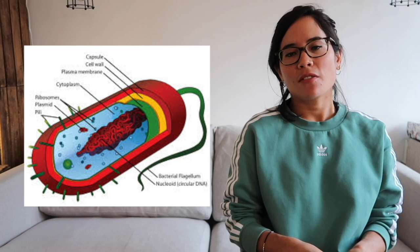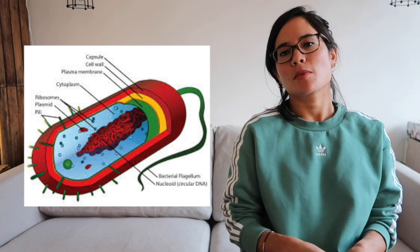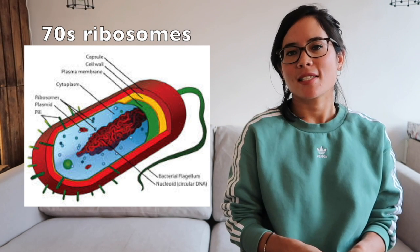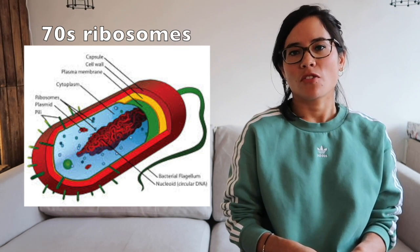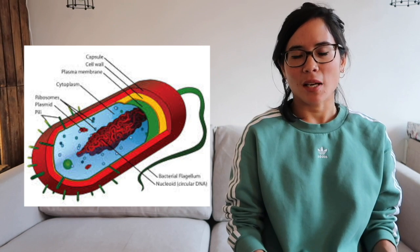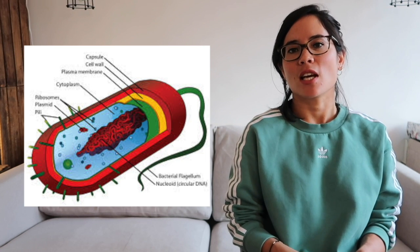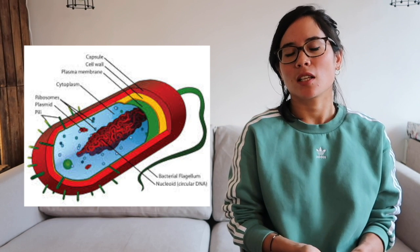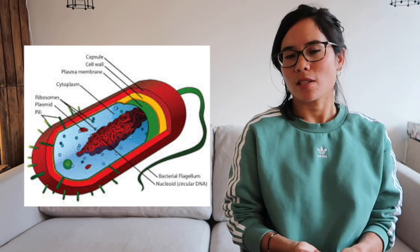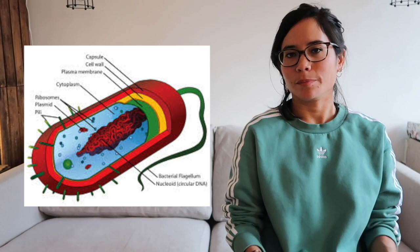Bacterial ribosomes are smaller compared with animal cells — they contain 70S ribosomes, which are found freely within the cytoplasm and not attached to endoplasmic reticulum. Indeed, bacterial cells don't have rough endoplasmic reticulum.